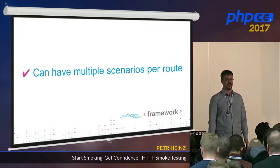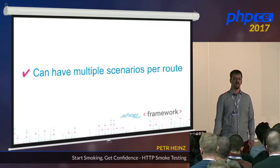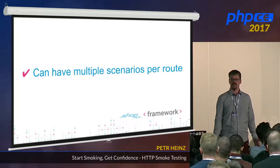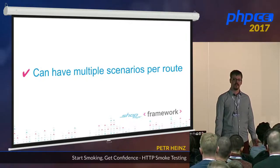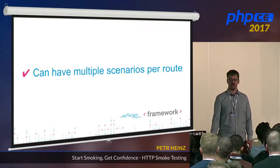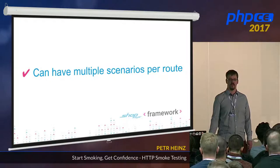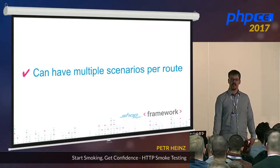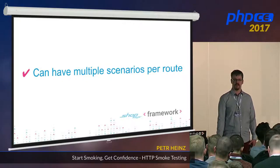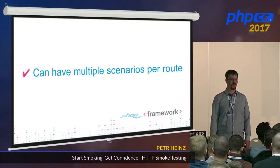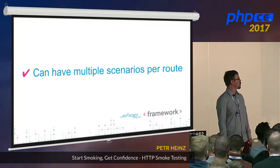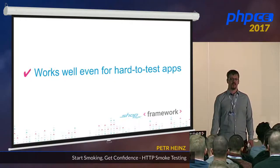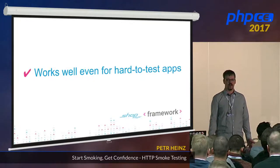Another big advantage is that it can have multiple scenarios per route. For example, you can add a rule that for every route starting with the keyword 'admin', you want to test it without authorization and with authorization. So you expect 403 Forbidden when an anonymous user tries to access it, and 200 OK for a logged-in administrator. The biggest advantage is probably that it works well even if your code isn't really written to be tested.